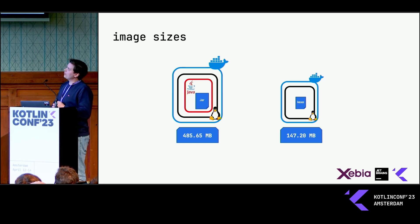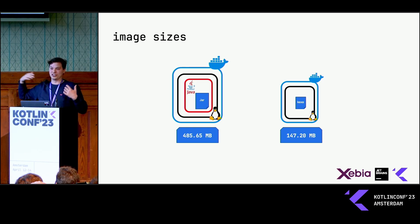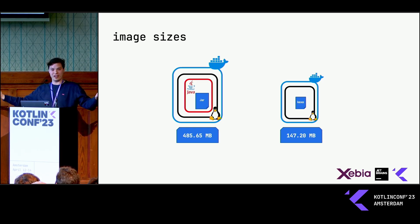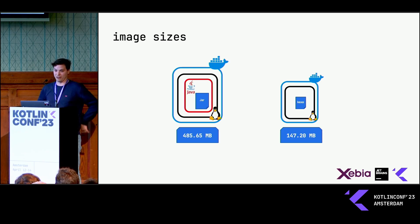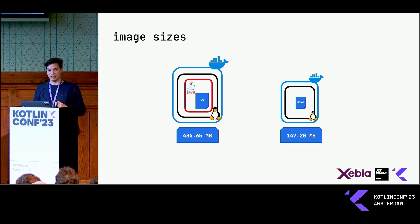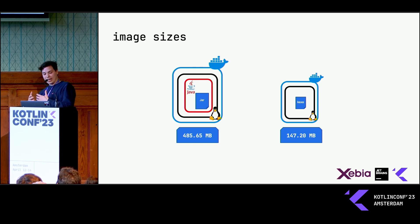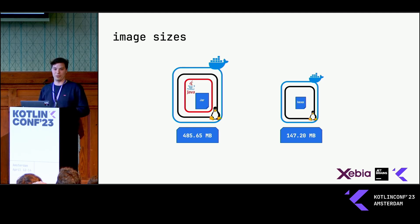One obvious result: the image size was easy to measure, and you see a very significant difference. Because of the lack of all the stuff needed in the JVM-based container, the native image is actually only one-third of the size. Pretty nice — that's definitely a good win for the Kotlin Native application.